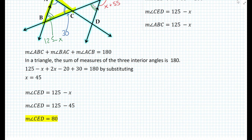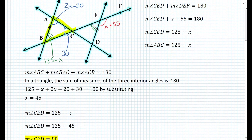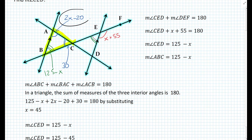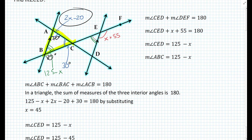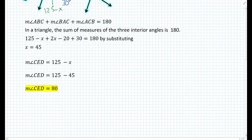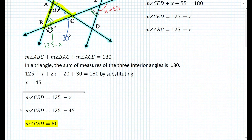We can double-check this by substituting 45 into 2x minus 20. We already have 80 degrees for angle CED and 30 degrees for angle ACB. Substituting 45 into 2x minus 20 gives us 70 degrees. So 30 plus 70 is 100, plus 80 is 180 degrees. It works! So the answer is confirmed: the measure of angle CED is equal to 80 degrees.